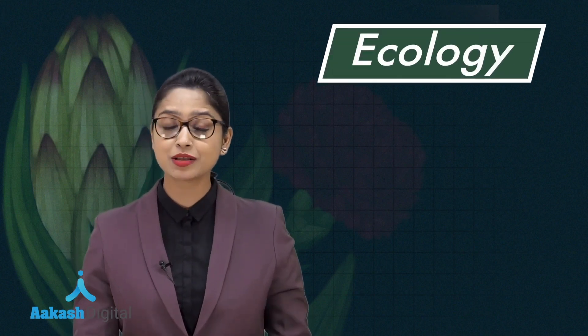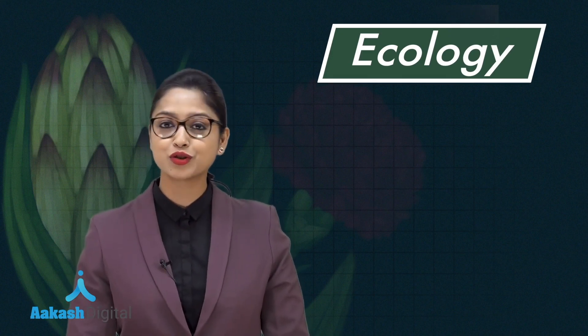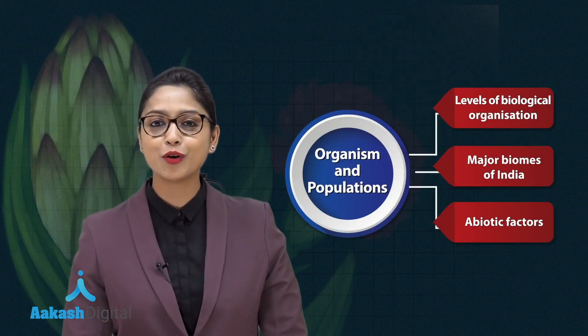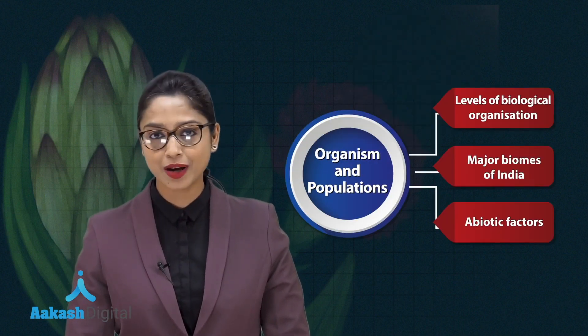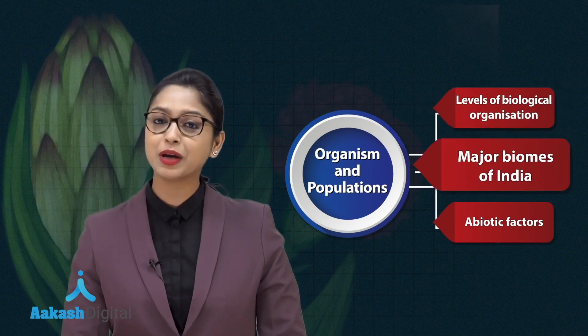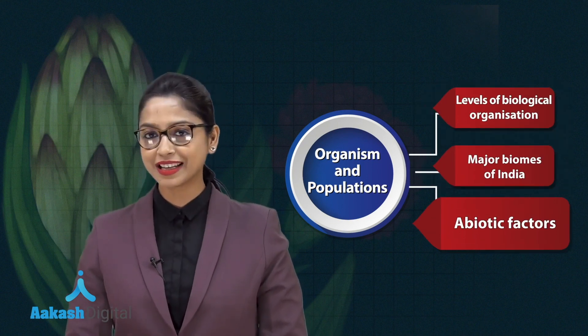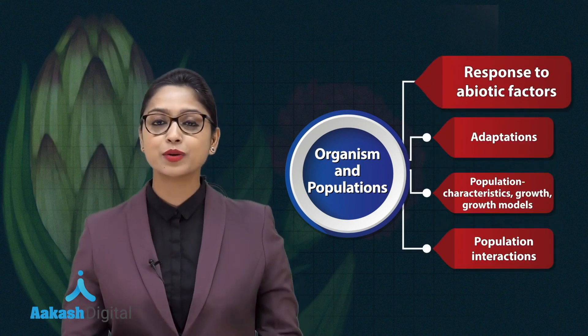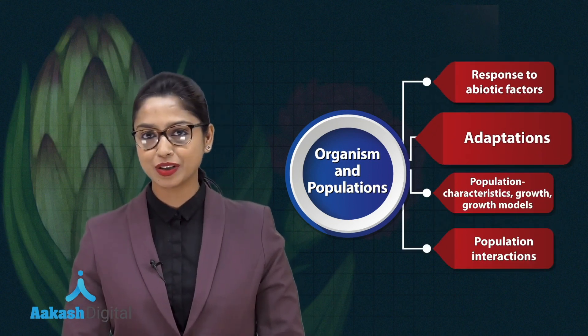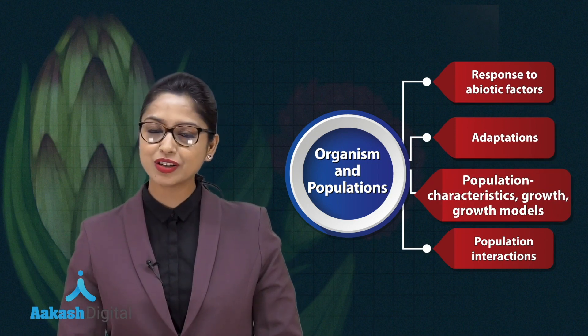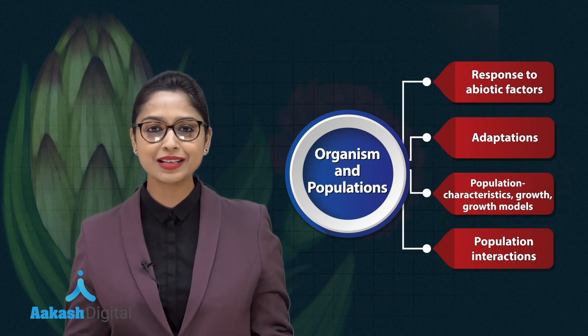Hello and welcome. Today we'll start with the last unit of your 12th class biology book, which is ecology. This unit is very important for your board exams and has been divided into four chapters. We will start with the first chapter, which is 'Organism and Population.' This chapter has been divided into four main topics: levels of biological organization, major biomes of India, major abiotic factors, and responses to abiotic factors and adaptation.